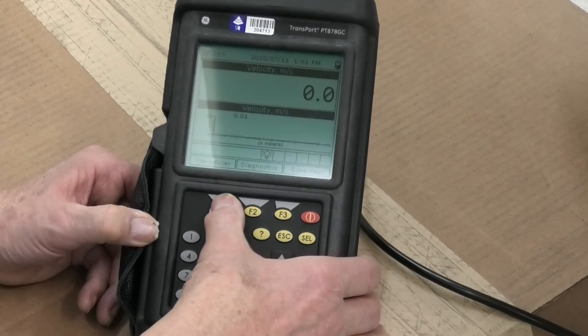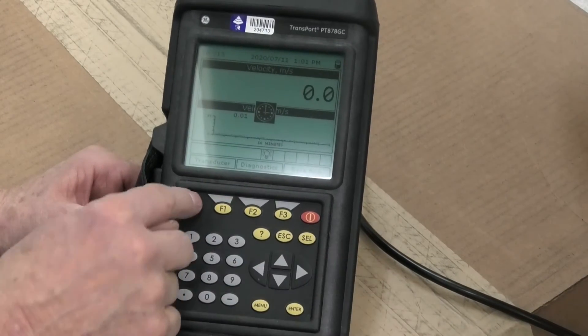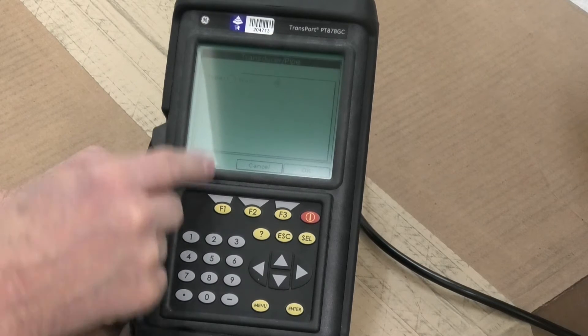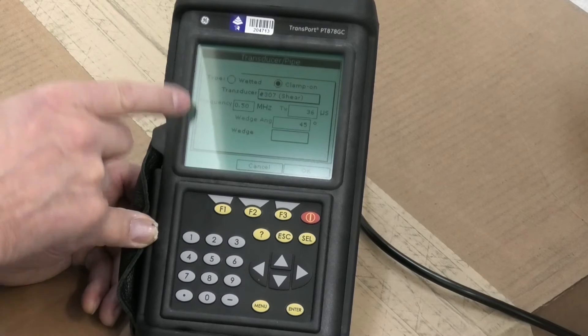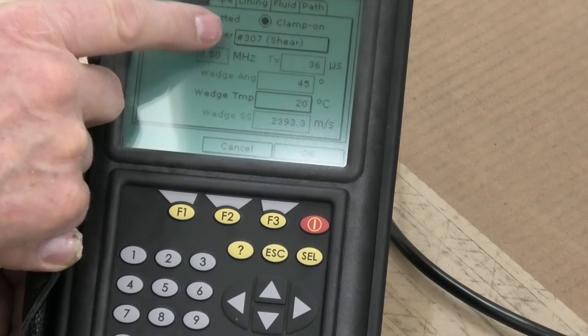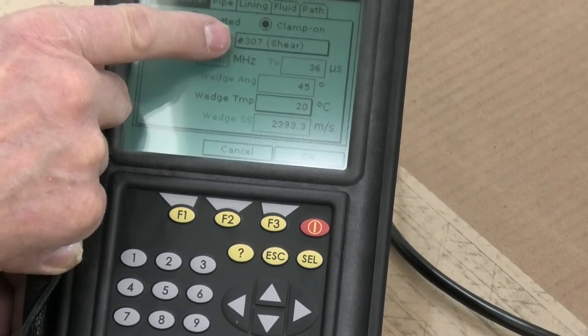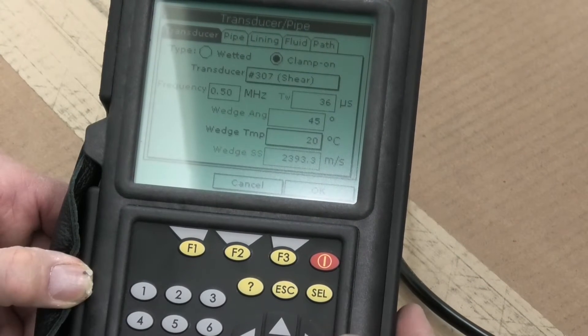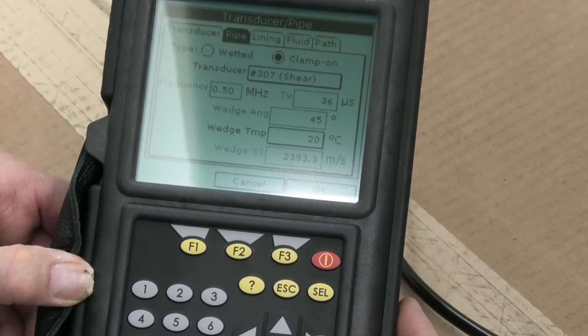Now we need to program it up, so I've got to tell it. We hit this transducer button and this brings up the programming page. Now I happen to have clamp on transducers, written on the side of the transducer it's a 307, and we need to give also the pipe details.